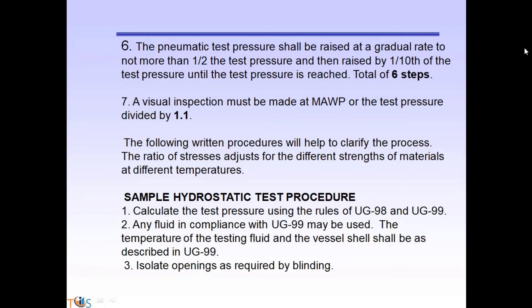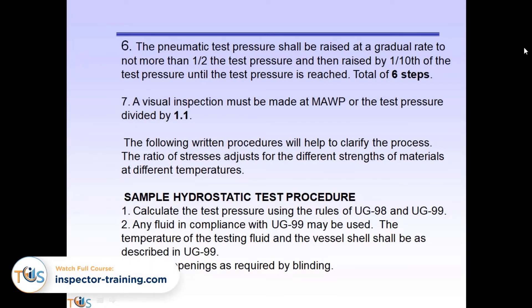Peening may be deemed necessary or helpful to control distortion, to relieve residual stresses, or to improve the quality of the weld. Peening shall not be used on the initial layer of weld metal nor on the final layer.